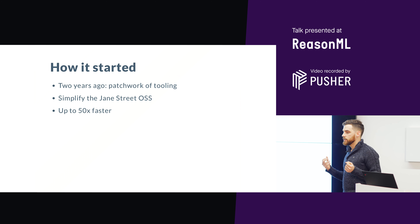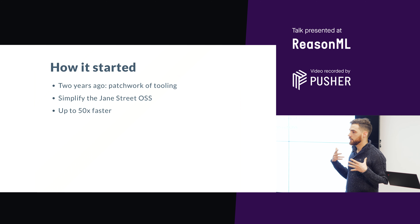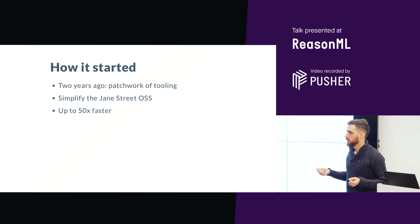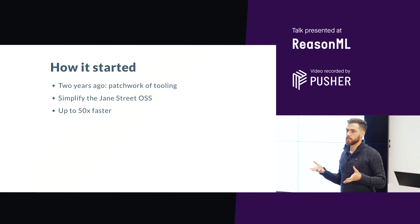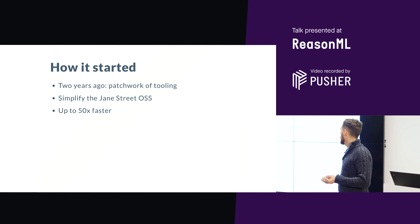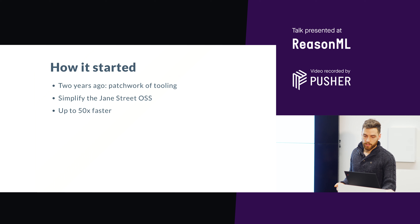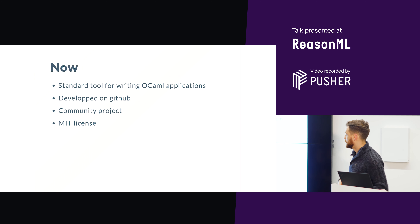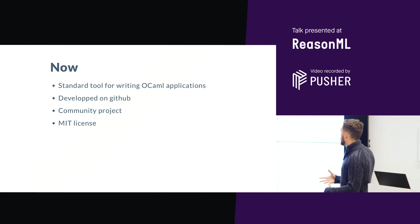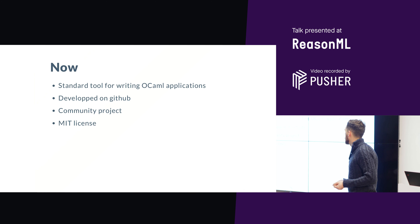That was the original idea of Dune — to re-implement everything from scratch into one single coherent tool. The immediate result was that build times became really, really fast. On average it was 10 times faster when projects were switching to Dune, and some users reported up to 50 times faster. So very quickly people started adopting it.